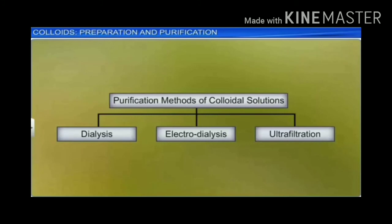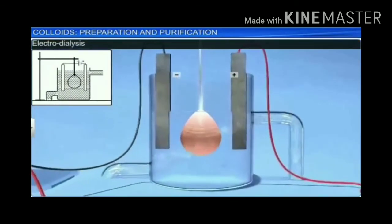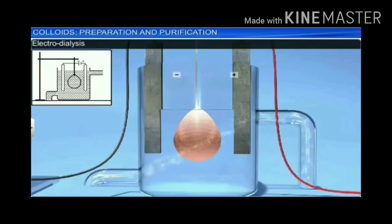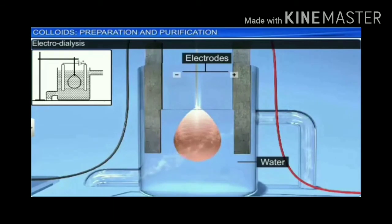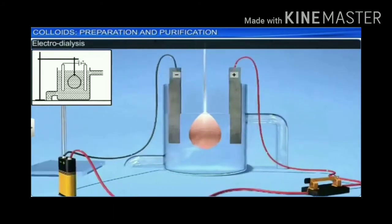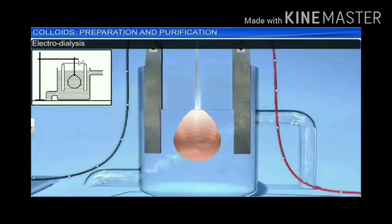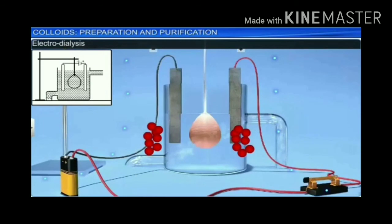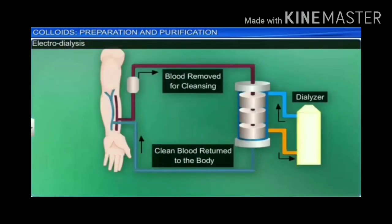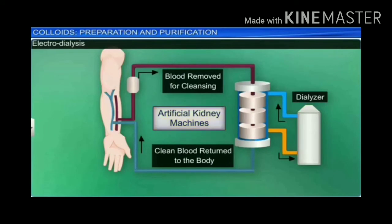A modified form of dialysis is known as electrodialysis. The ordinary dialysis process is slow, so to hasten purification, dialysis is carried out by applying an electric field. In this process, two electrodes are placed in the water compartment. When an electric field is applied across the electrodes, the ions of the electrolyte present as the impurity diffuse towards the oppositely charged electrodes at a faster rate. An important application of dialysis is in artificial kidney machines, where it is used to cleanse the blood of patients whose kidneys have failed.